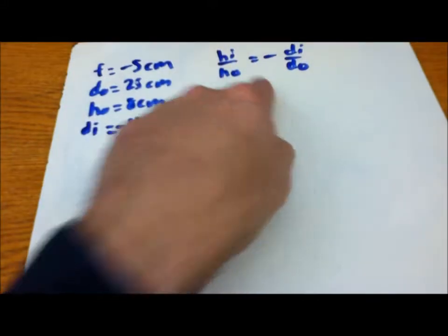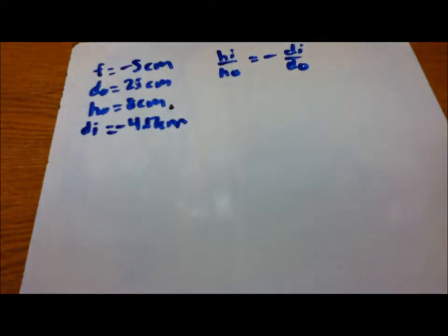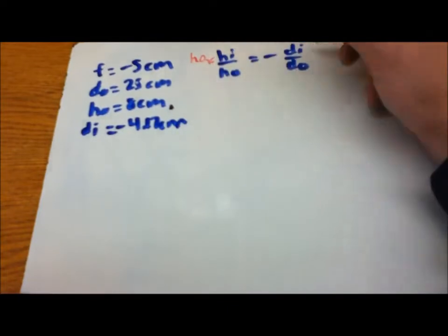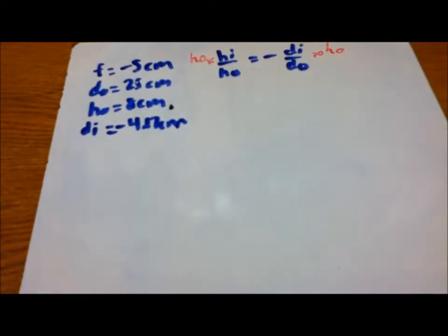So we use our magnification equation, and we're going to have to rearrange it to find hi. So multiply both sides by ho, and like we've been saying all along, ho cancels on that side.